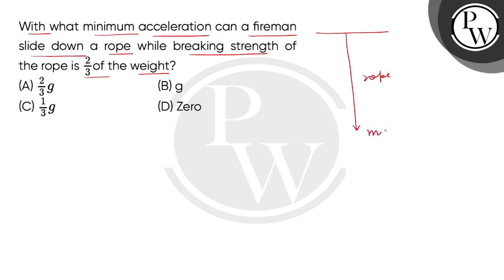We can think that if the fireman's mass is M, then it will be the weight of Mg. This is the representation of the fireman. Now the tension towards the support acting is T.